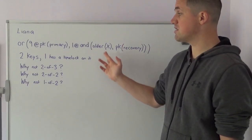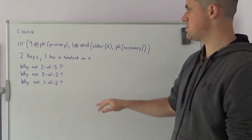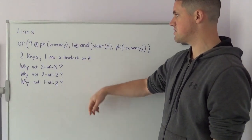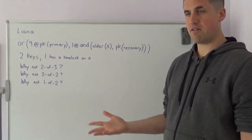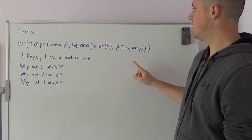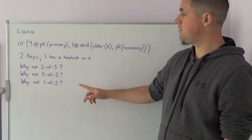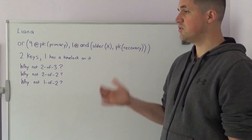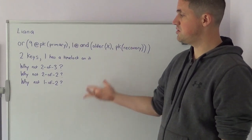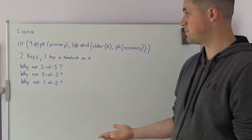Now, we can compare it to some other potential policies or other potential setups. We could say, why not just use a 2 of 3 threshold? The downside to using a 2 of 3 is that every single time you move the funds, you need to produce two signatures associated with two public keys.